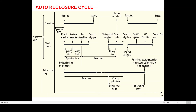Once the protective relay sees the fault, it will operate after its operating time and issue a trip command to the circuit breaker — energizing the tripping coil. At the same time, it will send an autoreclosure initiation or AR start signal to the autoreclosure relay. Once the protective relay issues a tripping command to the circuit breaker tripping coil, the tripping coil energizes, hits the latch, operates the operating mechanism, and pulls the pull rod of the circuit breaker.